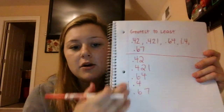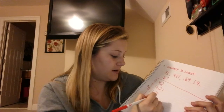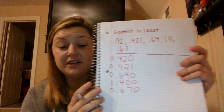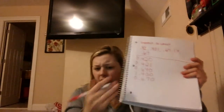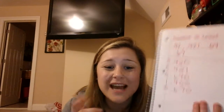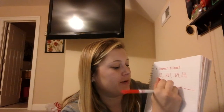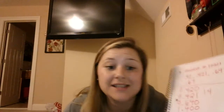We have 1 and 4 tenths, and then 67 hundredths. I can go back where it's not lining up and go ahead and stick my zeros in, so all my numbers are even lengths. I'm going to start in my whole numbers column — do I have any whole numbers? I have one whole number, so I know that's got to be the biggest. So I'm going to write my 1.4 out here because I know that's going to be the biggest.